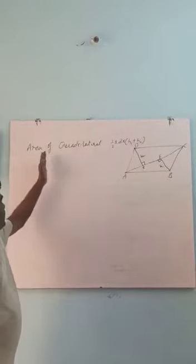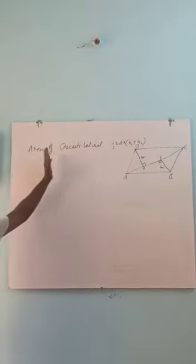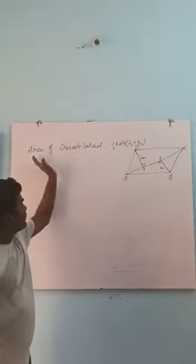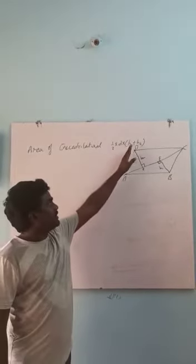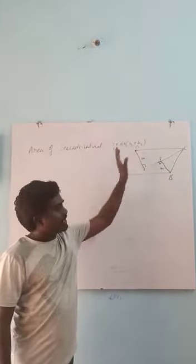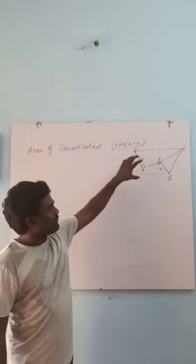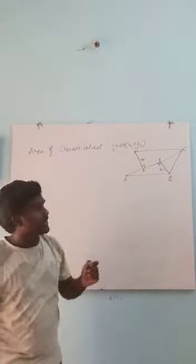Students, now I will teach you the area of a quadrilateral, the proof of area of a quadrilateral: half into D into H1 plus H2. A quadrilateral means a closed curve which has four line segments.